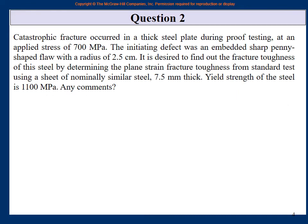That was part A and part B of question one. Let us go to another question. This is a full long question: Catastrophic fracture occurred in a thick steel plate during proof testing at an applied stress of 700 MPa. The initiating defect was an embedded sharp penny-shaped flaw with a radius of 2.5 cm. It is desired to find out the fracture toughness of this steel by determining the plane strain fracture toughness from a standard test using a sheet of nominally similar steel, 7.5 mm thick. Yield strength of the steel is 1100 MPa. Any comments?